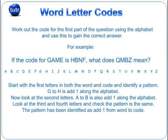Start with the first letters in both the word and code and identify a pattern. G to H is add one along the alphabet. Now look at the second letters — A to B is also add one along the alphabet. Look at the third and fourth letters and check the pattern is the same. The pattern has been identified as add one from word to code.